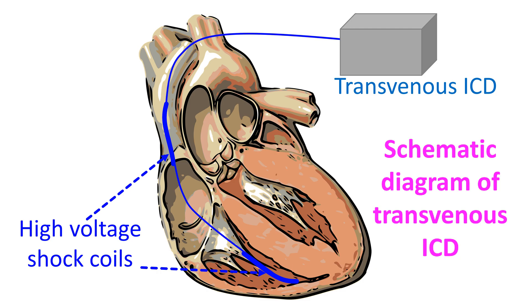Conventional ICDs are also called transvenous ICDs as the leads are introduced to the heart through veins. Veins are blood vessels returning blood to the heart and lungs for oxygen enrichment. Presence of leads within the veins and heart can be a source of infection, clot formation, perforation, and sometimes there could be displacement or fracture of leads.